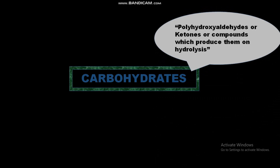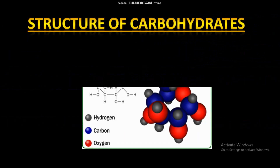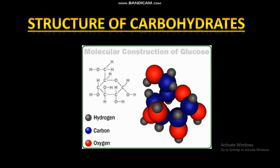Carbohydrates are composed of three elements: carbon, hydrogen, and oxygen. The molecular structure of carbohydrates is likewise made up of these three elements — carbon, hydrogen, and oxygen.